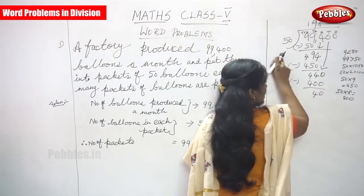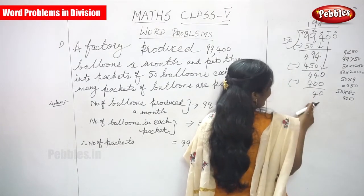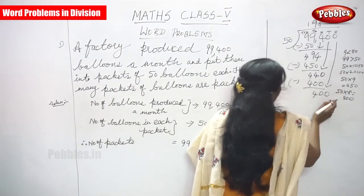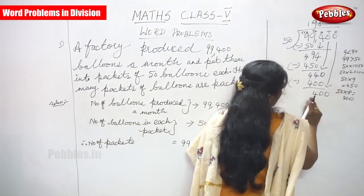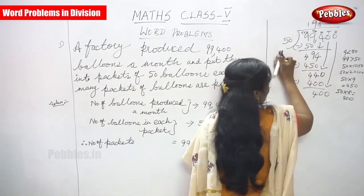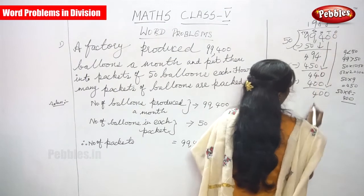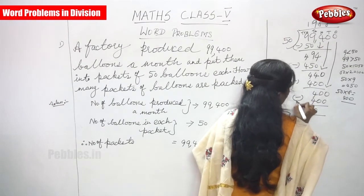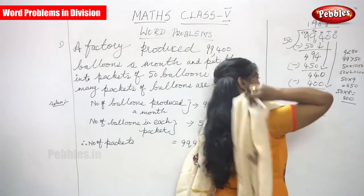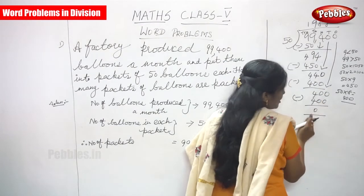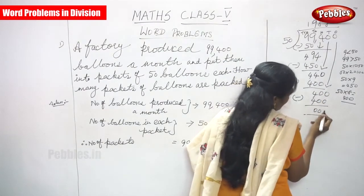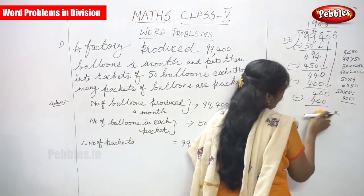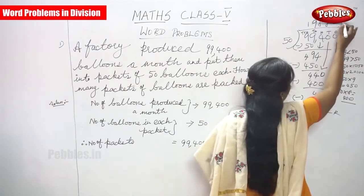Bring down the next 0. It becomes 400. So 50 into 8 is 400. Write 8 on the top. 400 minus 400 you can get 0: 0 minus 0 is 0, 0 minus 0 is 0, 4 minus 4 is 0. Everything is 0. Remainder is 0. Zero is the remainder and this is the quotient. This is the dividend and this is the divisor.